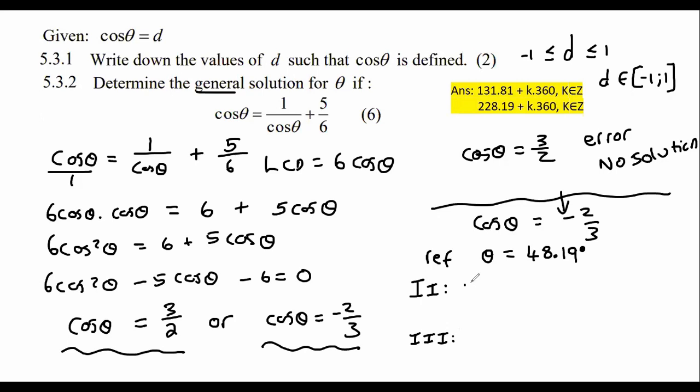Right. So for quadrant 2, I can say theta is equal to 180 minus, because in quadrant 2, we always say 180 minus. What do we minus? The reference angle. OK. Then you say plus k times 360. K is an element of Z. If your teacher uses n instead of k, that's absolutely fine. Some schools do use n instead. Then I'm just going to say 180 minus 48.19. And that gives us 131.81 plus k times 360. K is an element of Z.